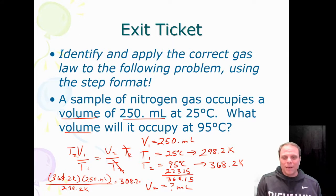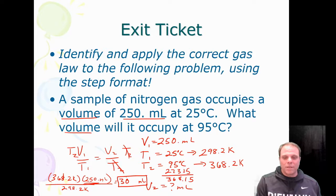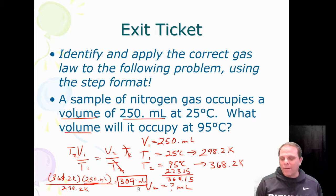Our calculated answer is 308.7 mL, but we can only keep three sig figs, so our final answer is 309 mL.